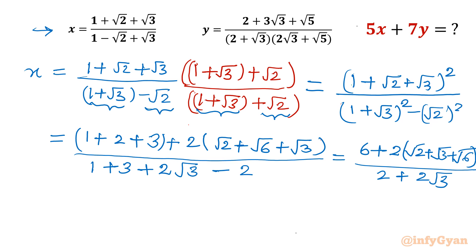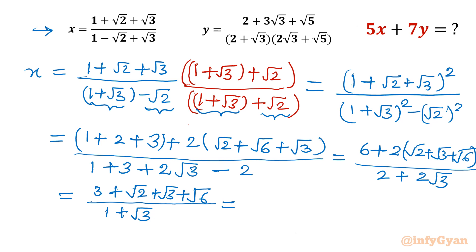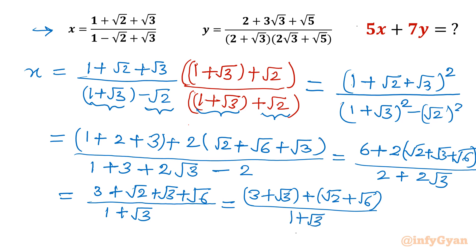Both numerator and denominator are divisible by 2, so dividing gives numerator (3 + √2 + √3 + √6) and denominator (1 + √3). I can group the numerator as (3 + √3) + (√2 + √6). From the first bracket I take √3 common to get √3(√3 + 1), and from the second bracket I take √2 common to get √2(1 + √3). The denominator is (1 + √3).